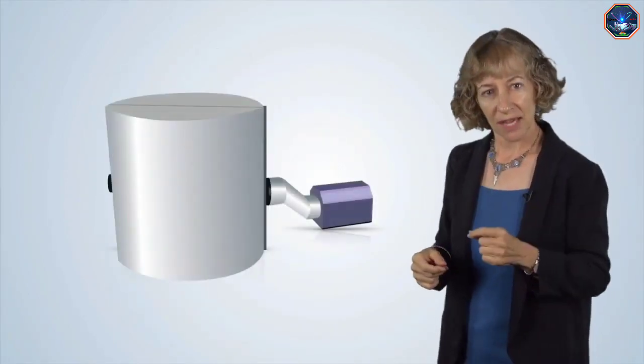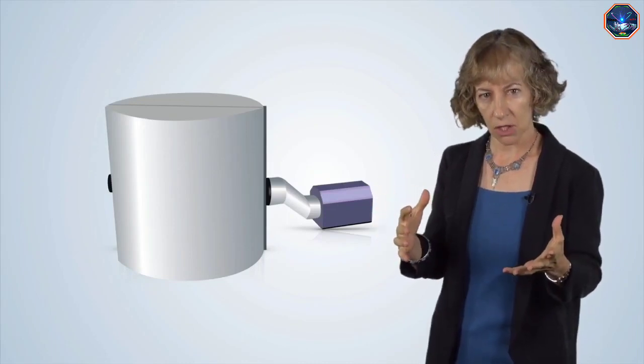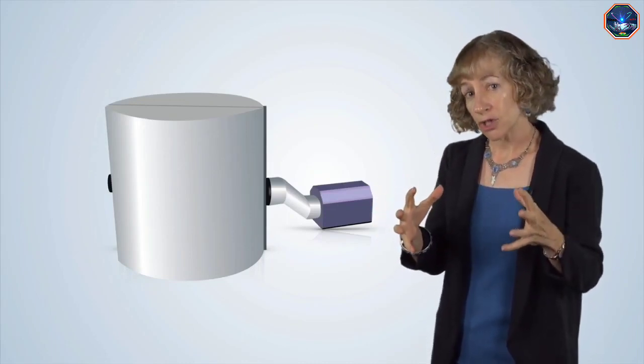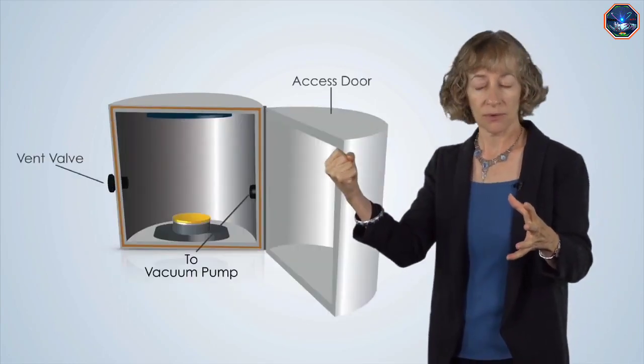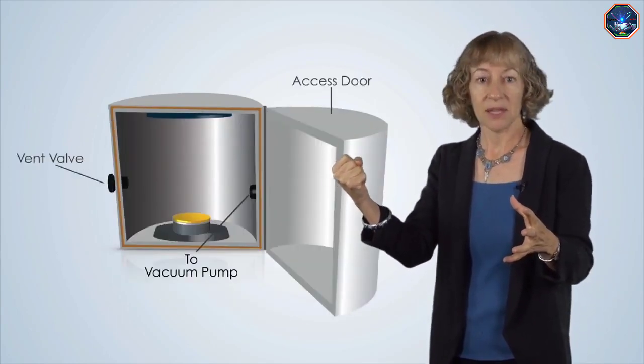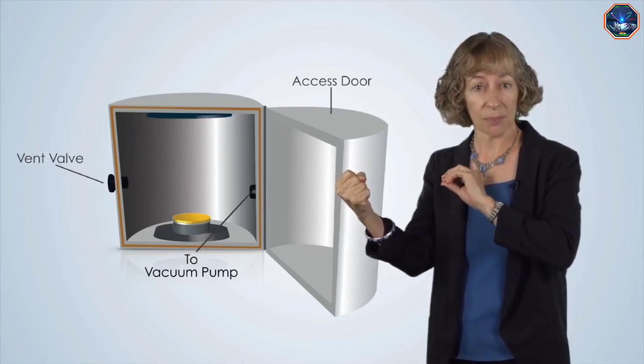To establish a vacuum, first we need a sealed chamber. This is typically a solid metal or glass enclosure. In order for the chamber to be of any use, it needs to have an opening of some sort, for example, a door or port that can be opened for putting samples in and taking samples out of the chamber.